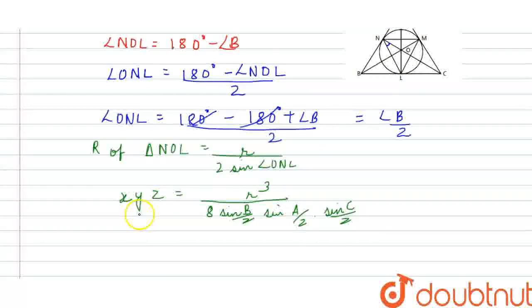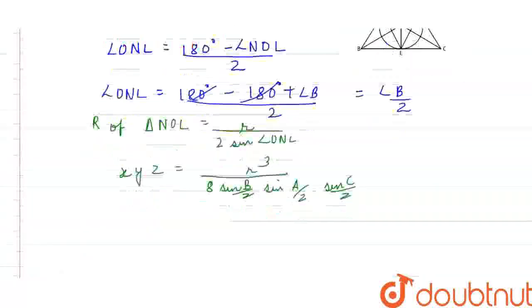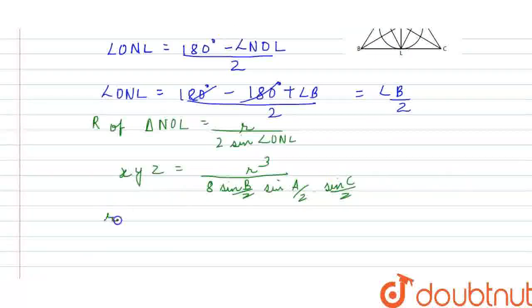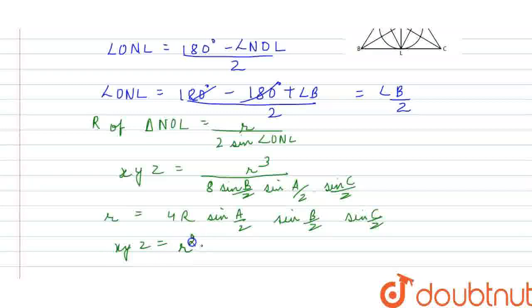Proceeding further, it would be equal to, now we know that R is equal to 4R sine A by 2, sine B by 2, and sine C by 2, so I will be substituting it here. What I get is X, Y, Z equals R squared R upon 2.